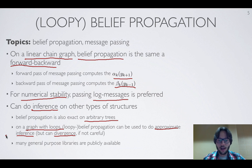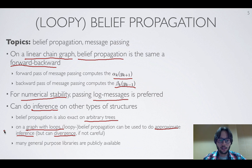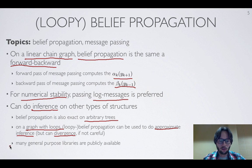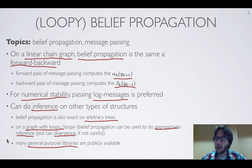You have to be careful with loopy graphs — the algorithm could diverge. There are tricks to make it converge; one is that instead of overriding messages, when recomputing a message on a second pass you do a weighted average between the current and previous message. There is a vast body of literature on message-passing algorithms and loopy belief propagation. Also, general-purpose libraries are publicly available where you just pass the graph in a data structure and the algorithm runs belief propagation over your graph.